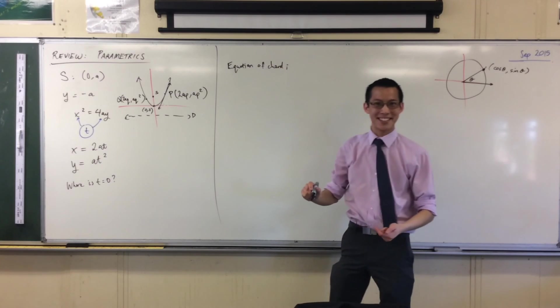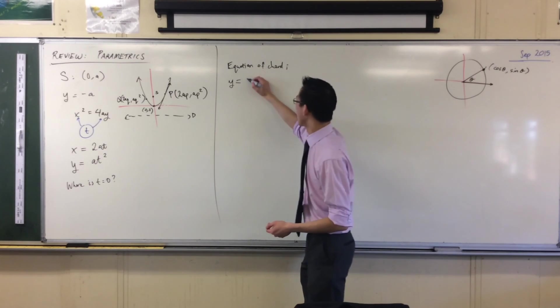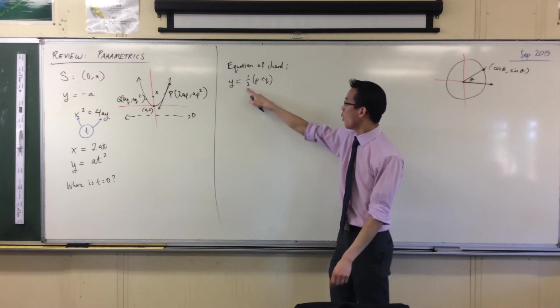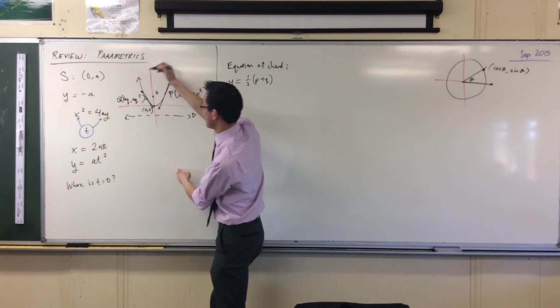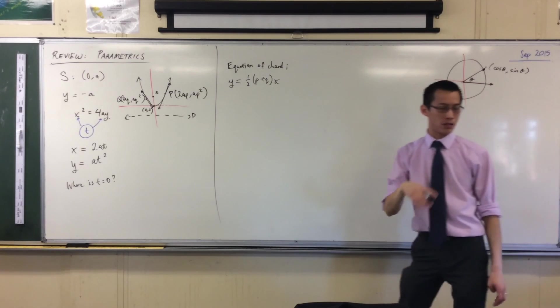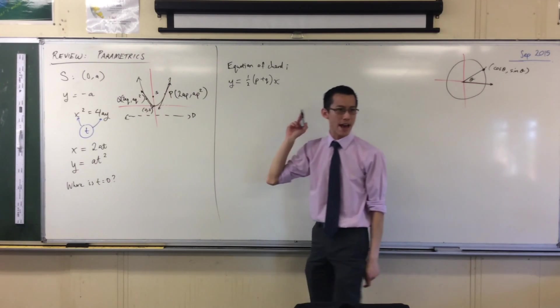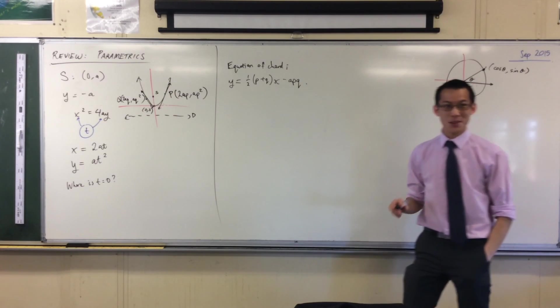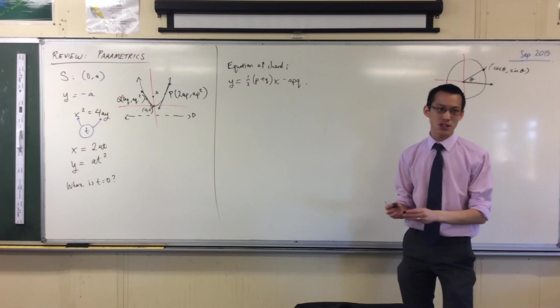So we said the equation of the chord, and we actually derived this. It's been a while so I'll be very impressed if anyone remembers. It starts with y equals one half (p plus q) x. What is this half p plus q? It's the average of the two gradients of the two tangents. So to get the gradient of this chord, I average the gradients of the two tangents, and then what do I have hanging on the end here? Minus apq. So there's your equation of chord, but this was just dipping our toe.